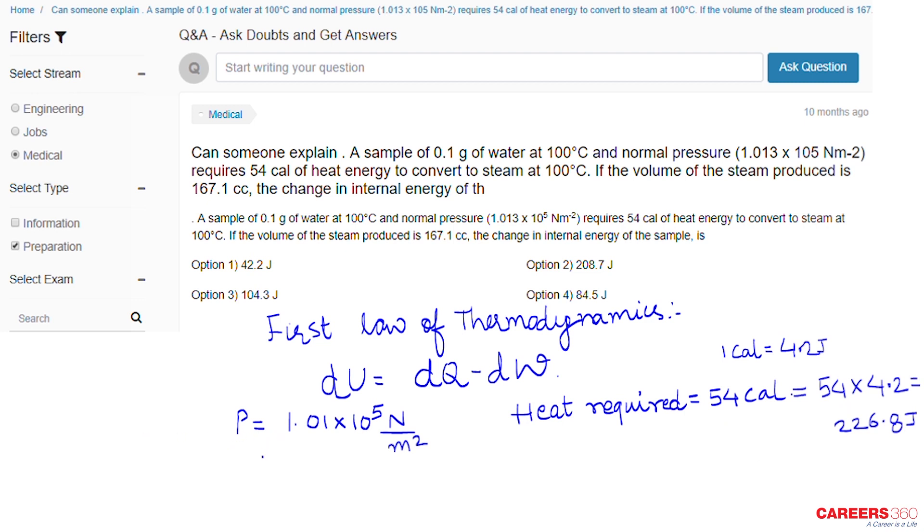Now, let's solve for the work done by the system. Work done equals P·ΔV. The pressure is 1.01 × 10^5 N/m², and the volume ΔV is 167.1 cc.